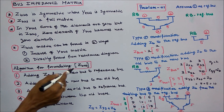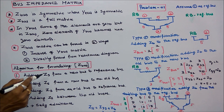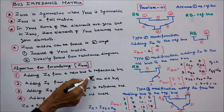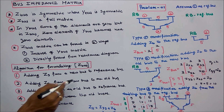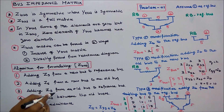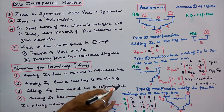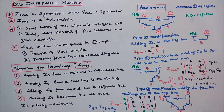Algorithm for formulating Z bus. Type 1: adding ZB from a new bus to the reference bus. Type 2: adding ZB from a new bus to an old bus. Type 3: adding ZB from an old bus to the reference bus. Type 4: adding ZB between two old buses. Here ZB is the self-impedance.